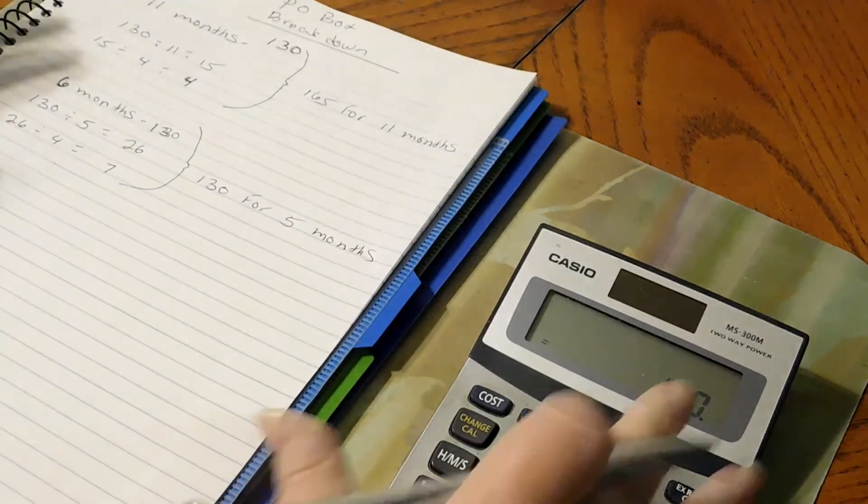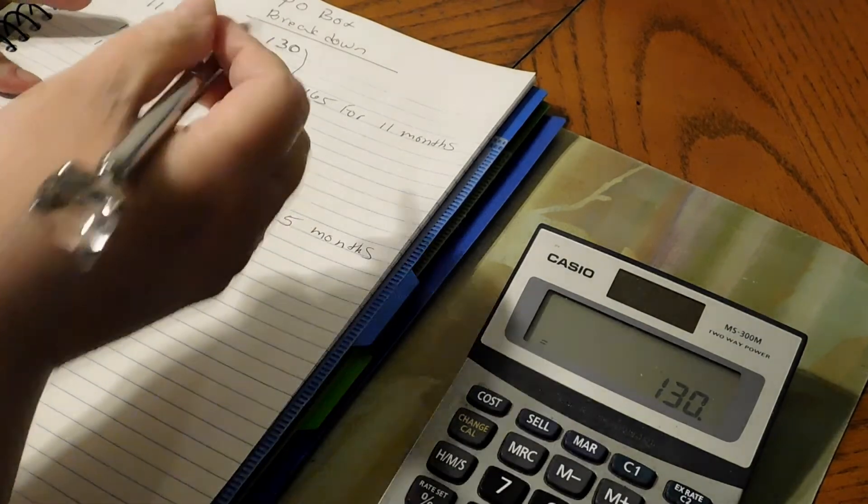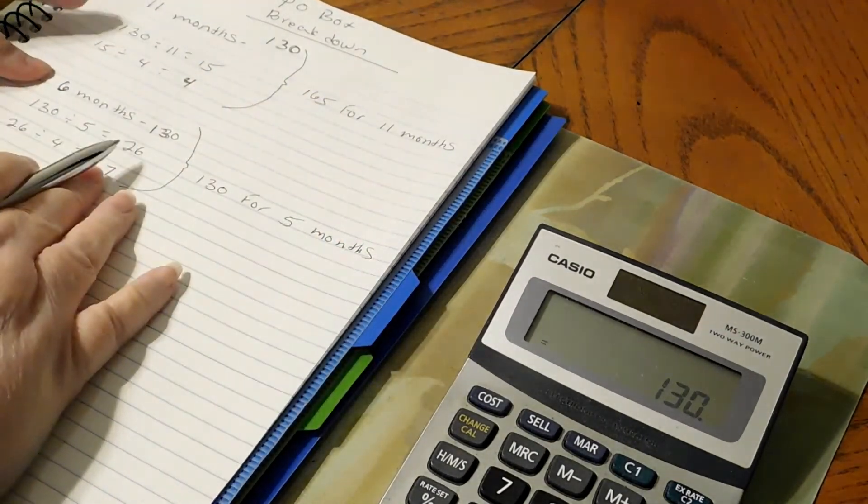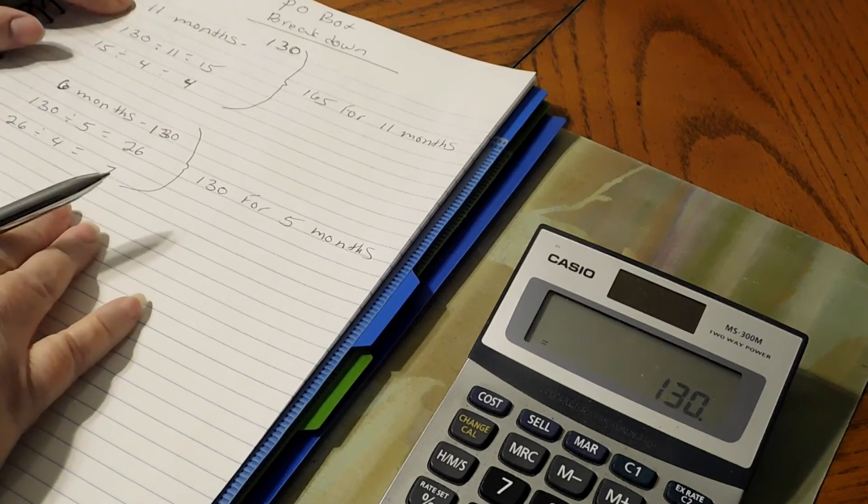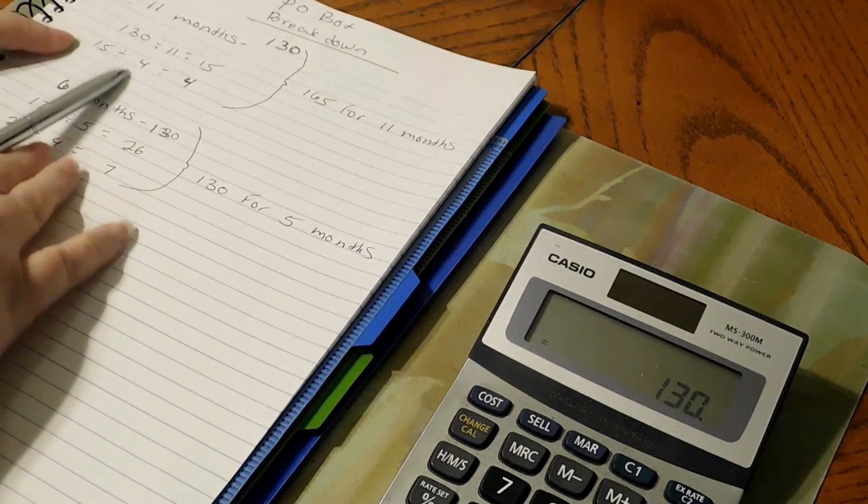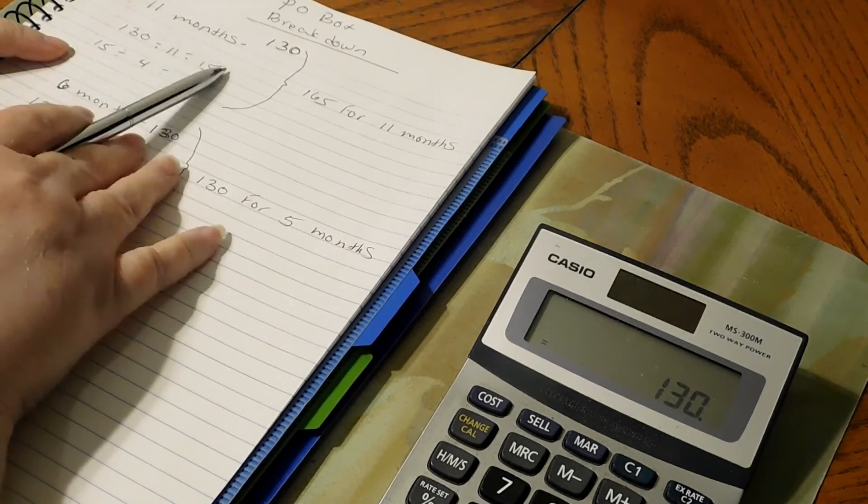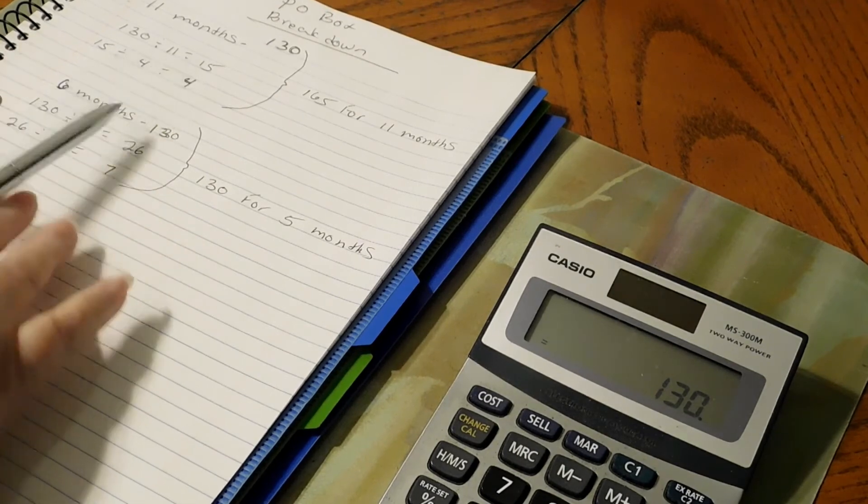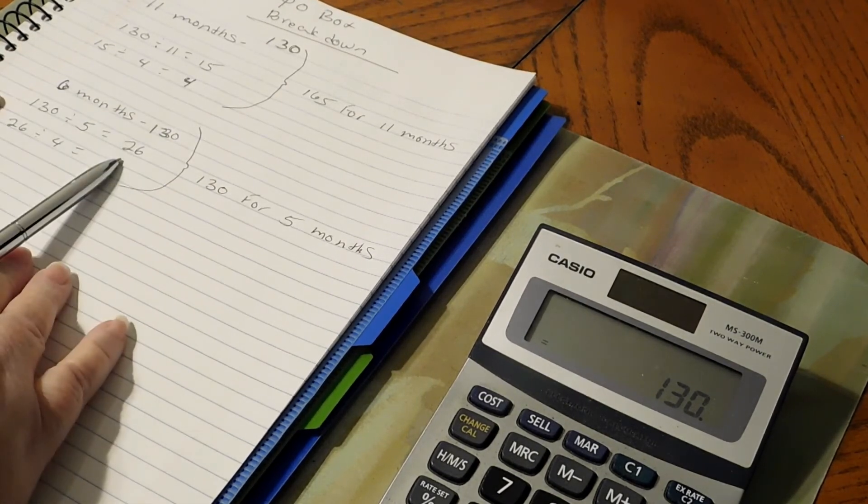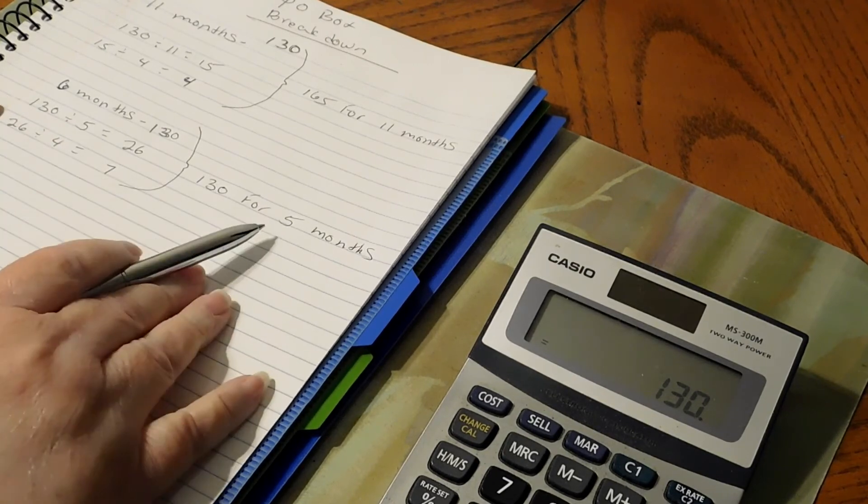$130 if you do it the 26 weeks, which would be six months at $130, or if you do the 11 months for the whole year at $130. So you would have to put in, if you're going to do it yearly for the 11 months, you would have to put in $4 a week for that. Or if you're going to only do it for 26 weeks, which would be for the last five months, then you would have to put $7 a week in.